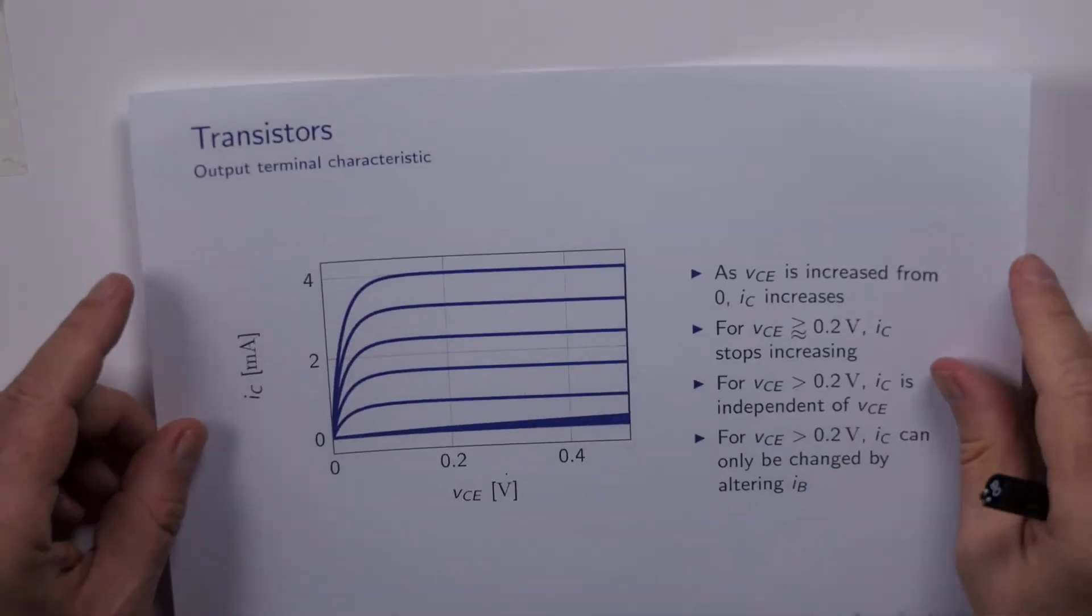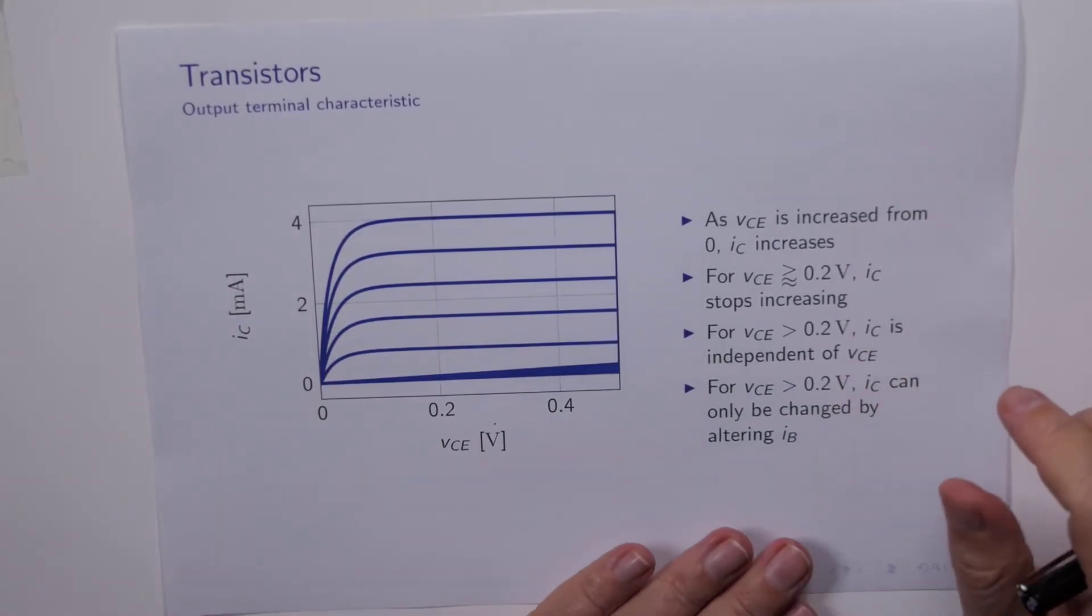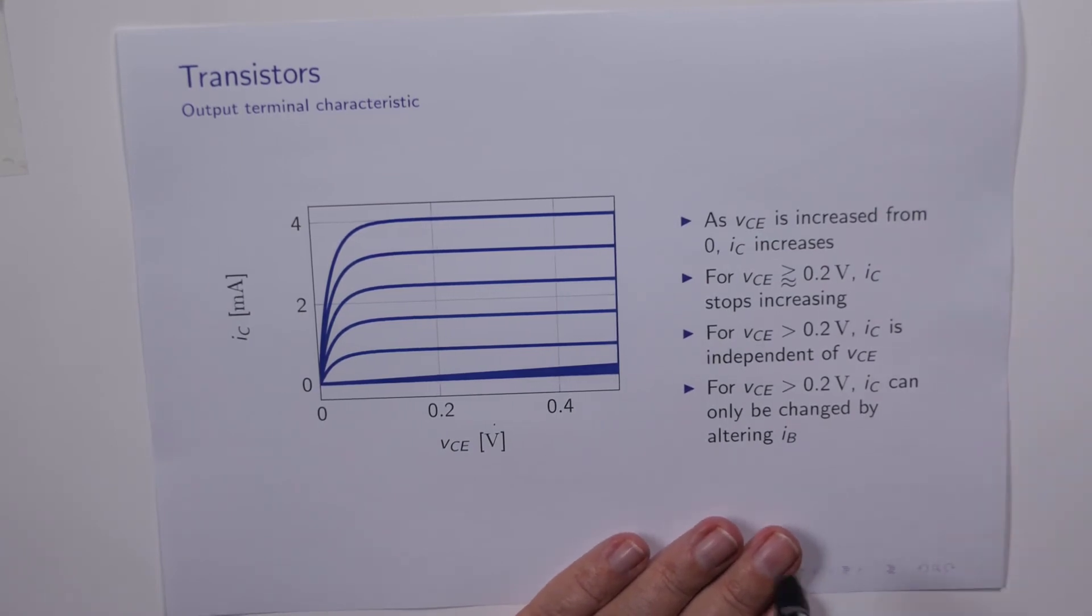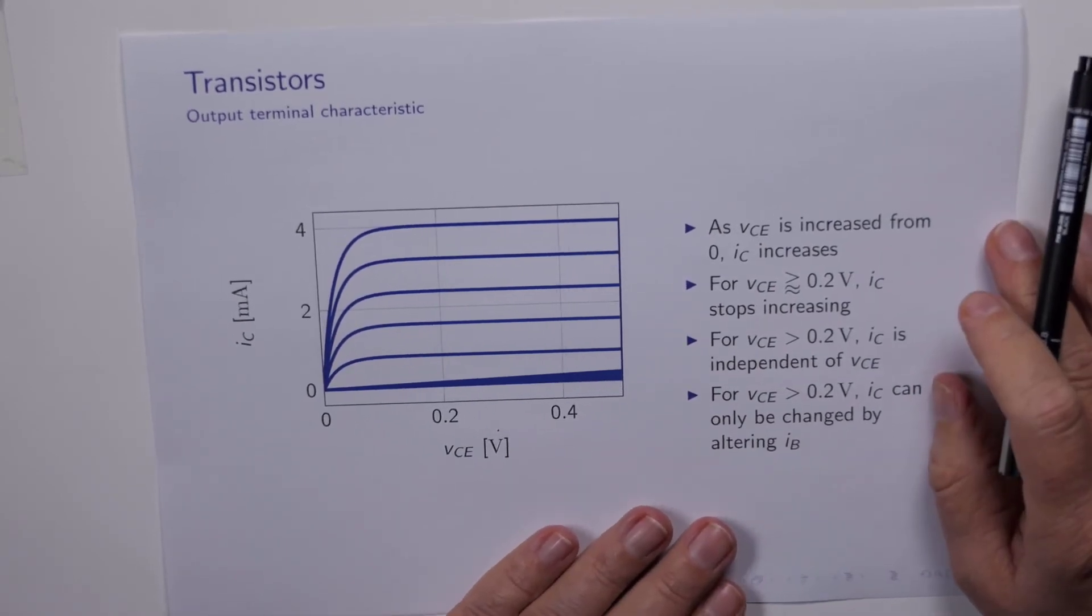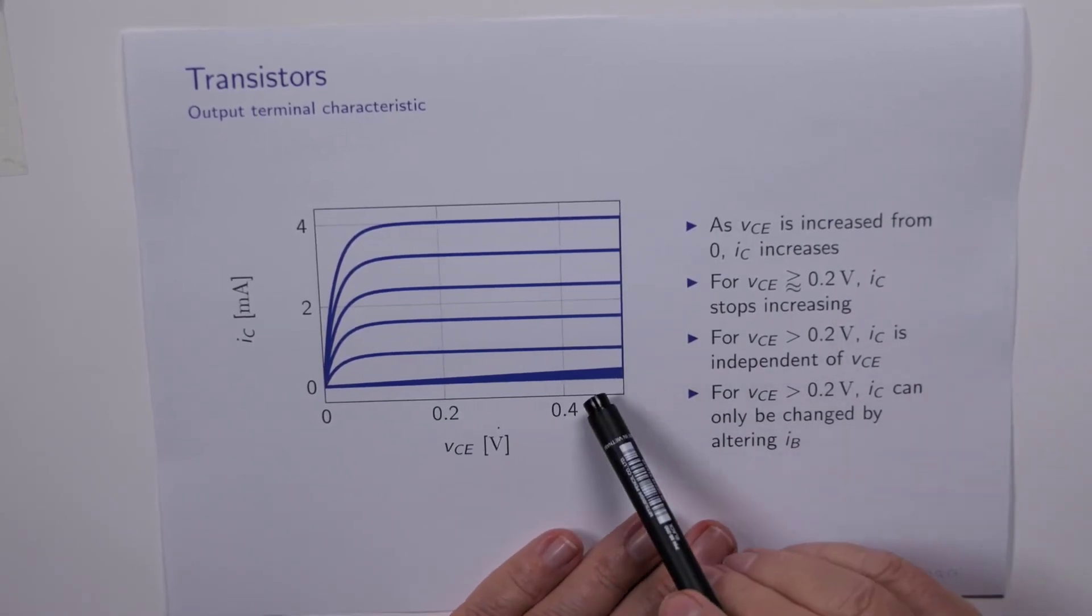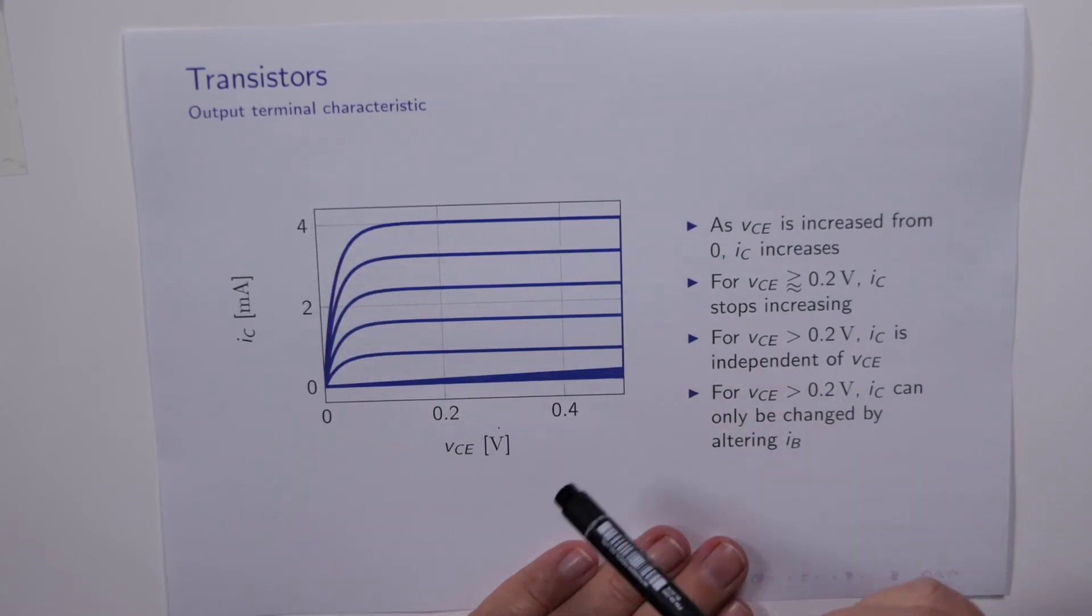Here is the family of curves for the output terminal characteristic. There's something funky happening down here. I don't know why this line has gone all fat, but it's not in the electronic version, and my printer has just decided to misunderstand its postscript instructions. But anyway, here's our graph of IC versus VCE.